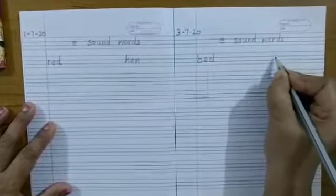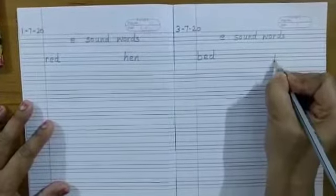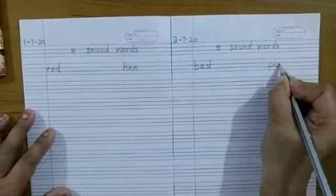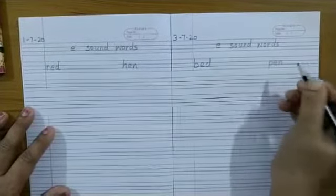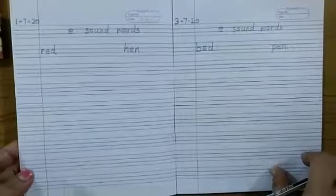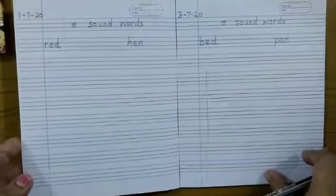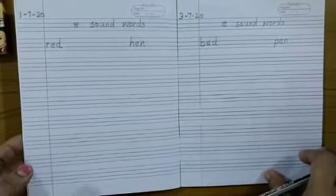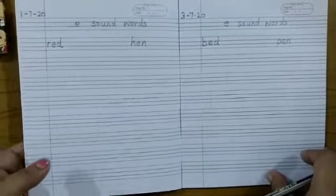The next word is pen. P, E, N — Pen. Now you have to complete this fully. Write it a full page and take a photograph of it and send it to the Google Classroom. That's all for today. Bye, see you next class.